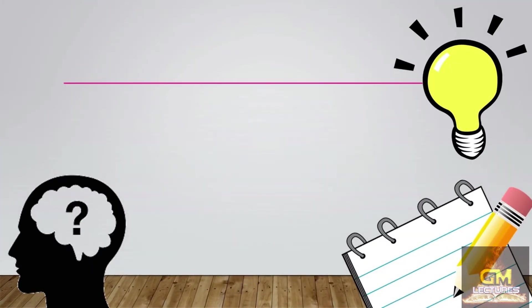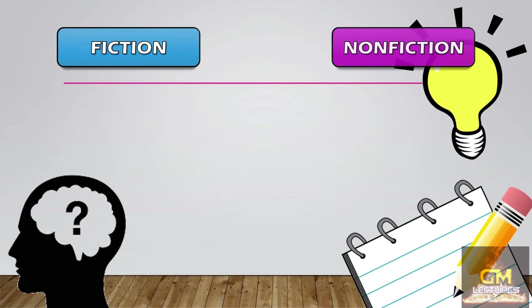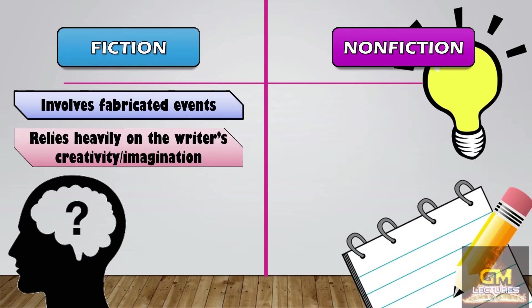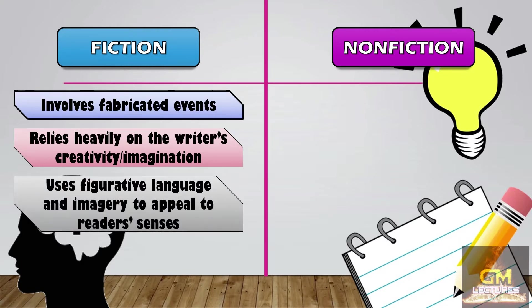At this point, we're going to talk about the differences between fiction and non-fiction. One of the major characteristics of fiction is that it involves fabricated events. This is because fiction relies heavily on the writer's creativity and imagination in order to come up with meaningful stories. Furthermore, for a writer to come up with meaningful stories in fiction, he must effectively use figurative language and imagery in order to appeal to the reader's senses.